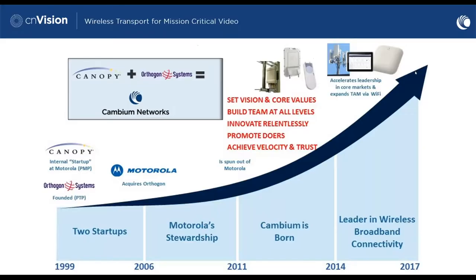If you've not heard of Cambium Networks, we are very well known in the wireless internet service provider industry — the WISP industry. Our Canopy product line was the pioneering solution that enabled broadband internet throughout rural America and the rest of the world. Canopy and Cambium Networks were part of Motorola Solutions for a number of years; in 2011 we split out and became a standalone company, and then in 2019 became a publicly traded company.